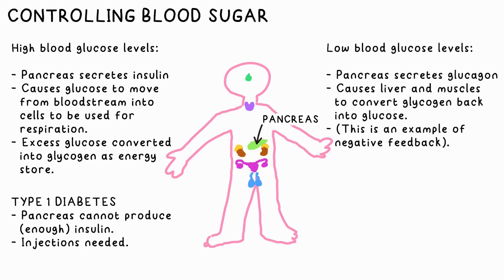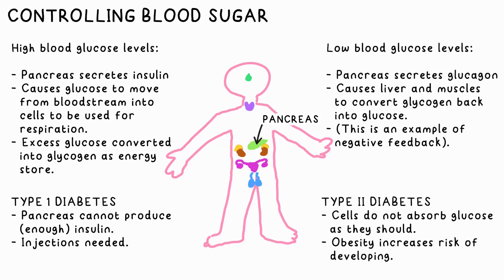Type 1 diabetes is what you have when your pancreas can't produce enough insulin, and you have to take insulin injections to do the job instead. Type 2 is when your cells no longer absorb the glucose as they should, so you have to be careful with your diet — and if you're overweight or obese, you have a much higher risk of developing this.